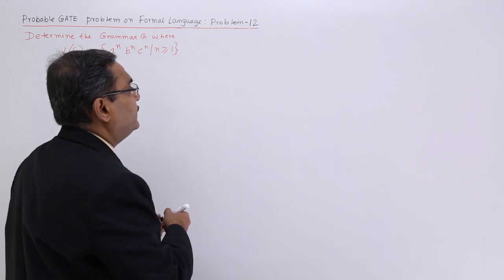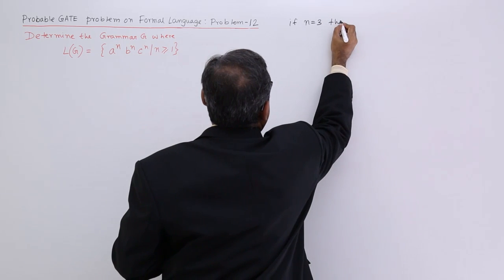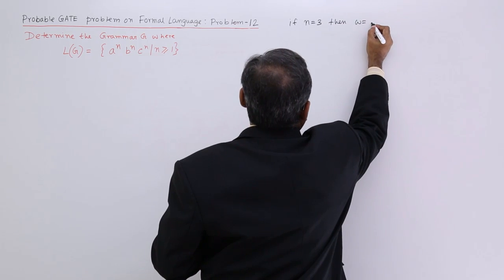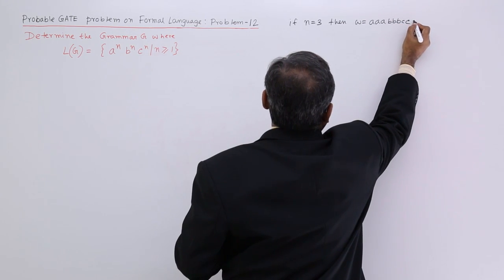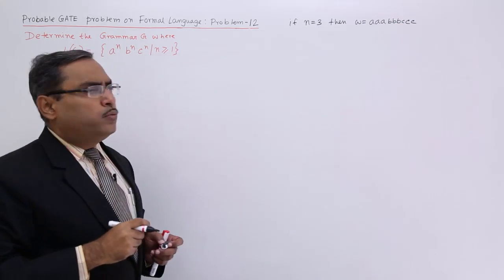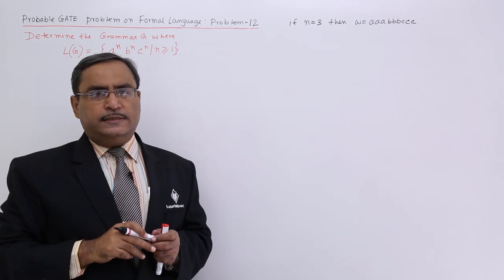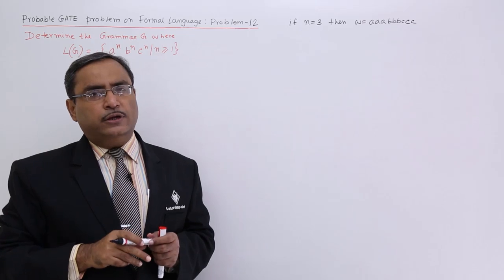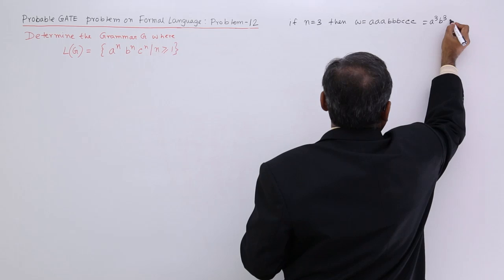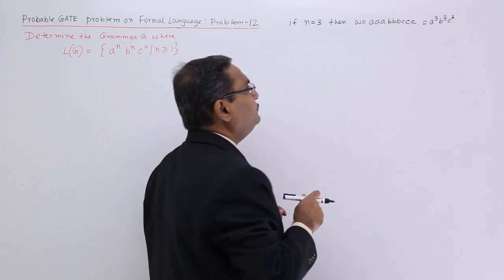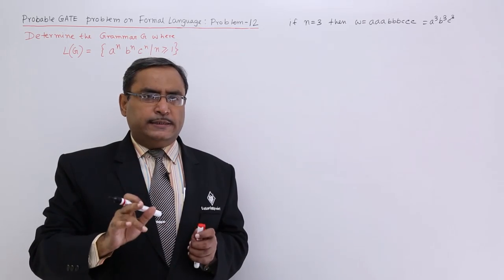If N is equal to 3, then my sentence will be A, A, A, B, B, B and C, C, C — which is equivalent to A cube, B cube, C cube. Now I shall have to solve it. Here the value of N is equal to 3.